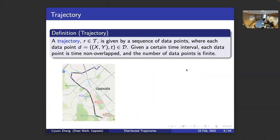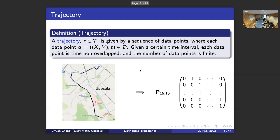Looking at the picture, each data point during a certain time interval is non-overlapping — you can't have two different locations at the same time. The number of data points during a time interval should also be finite. One of our main goals in this project is to express the trajectory — and what we'll call the distributed trajectories — in an abstract and mathematical way, so we can learn about human mobility patterns, population density, or transportation control. One good way to do this is using a transition matrix: during a time interval we move from state one to state two, state two to three, and so on until we arrive at our destination.